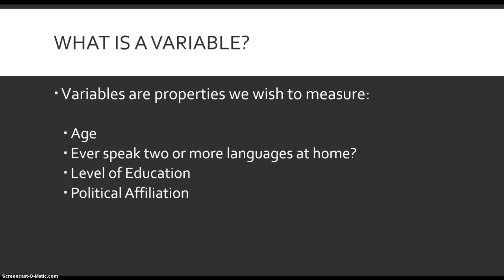Variables are a quality or property of an item — either an individual or a school — that varies, that can vary from one unit of analysis to the next. So take something like age, and age can vary from one individual to the next. In order for there to be a variable, there needs to be at least two values.